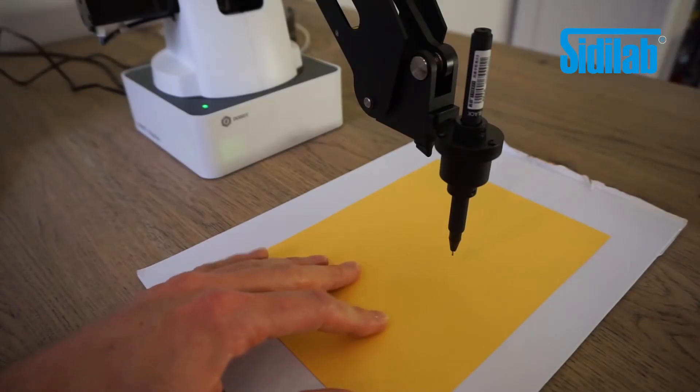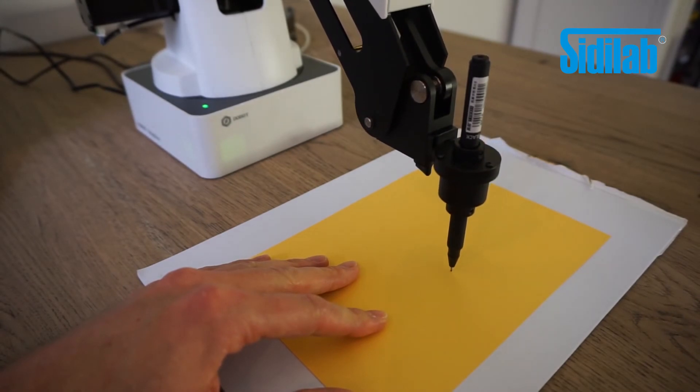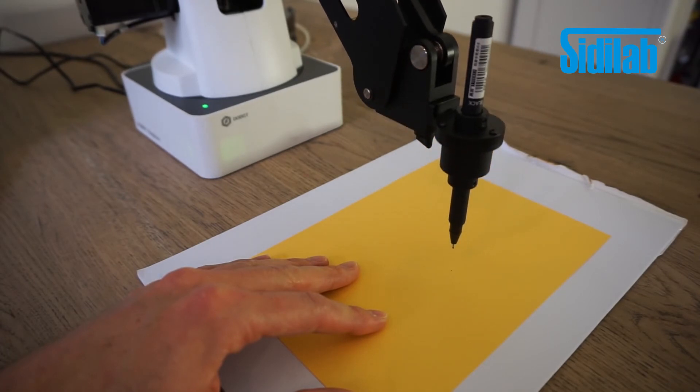You can do this by moving the pen down until it just touches the paper. Then press the auto-Z and the pen down position is registered. Raise the pen back up, press start and that's it.